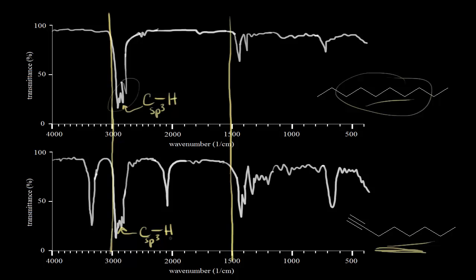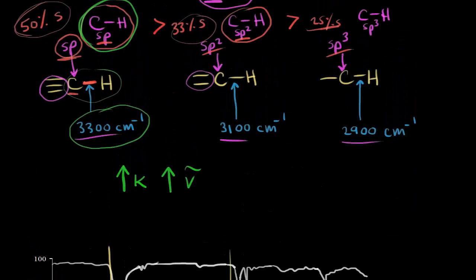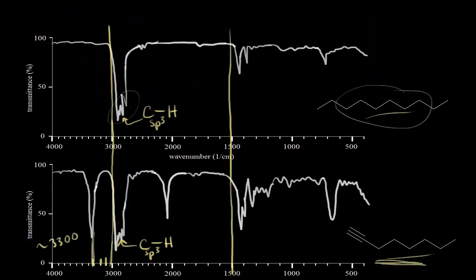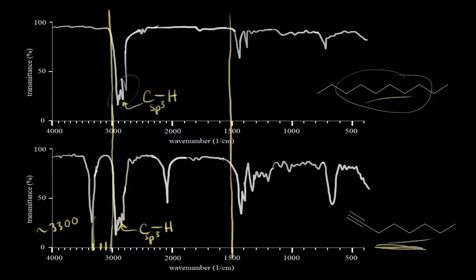Once you draw that line at 3,000, you can see differences. In the 1-octyne spectrum, there's a signal that, when we drop down, is pretty close to 3,300 wave numbers — about 3,100, 3,200, 3,300. So approximately 3,300 wave numbers. We can go back to our earlier analysis and confirm that 3,300 is where we expect to see the C-H bond stretch where the carbon is sp-hybridized.